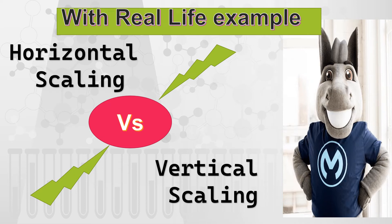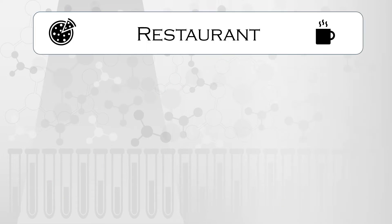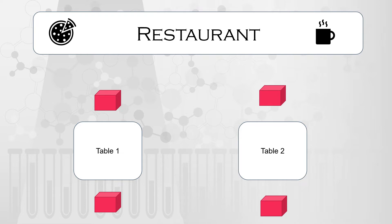In this video we are going to discuss horizontal scaling and vertical scaling. Let's consider that you own a restaurant with two tables. We can safely assume that whenever someone visits your restaurant they always visit in a group of two, so you have two tables — at any point of time they can serve two groups.